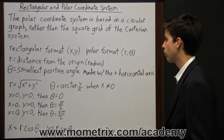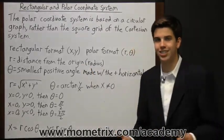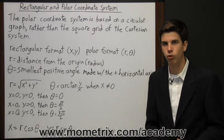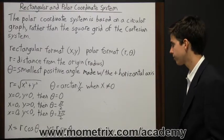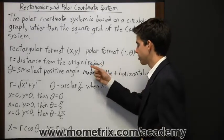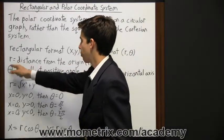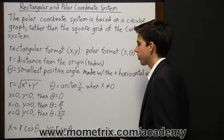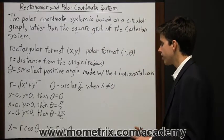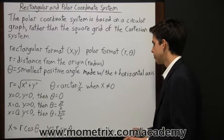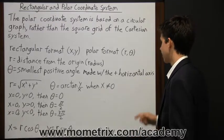So r is the distance from the origin, and the origin is the center of the coordinate plane, where the x-axis crosses the y-axis. We can call that the radius, and that's easy to remember because radius starts with r, and we're looking for variable r. Now, theta is the smallest positive angle in the counterclockwise direction made with the positive horizontal axis.